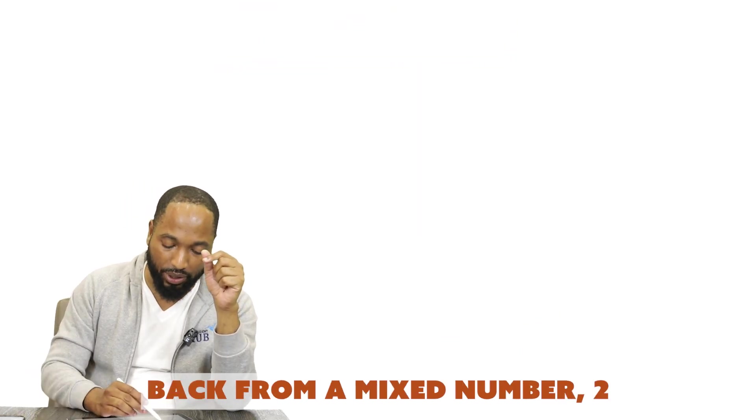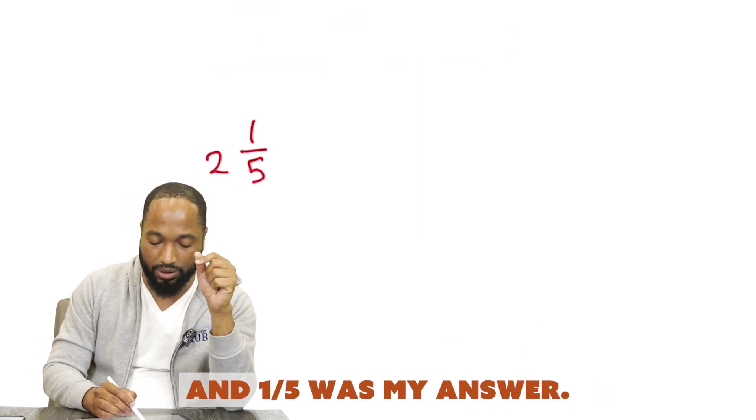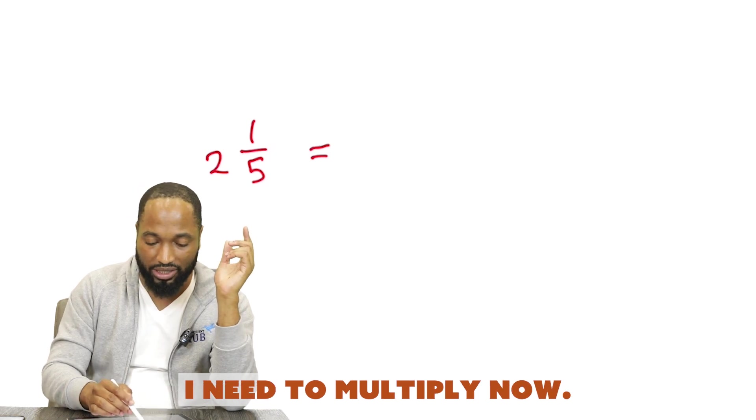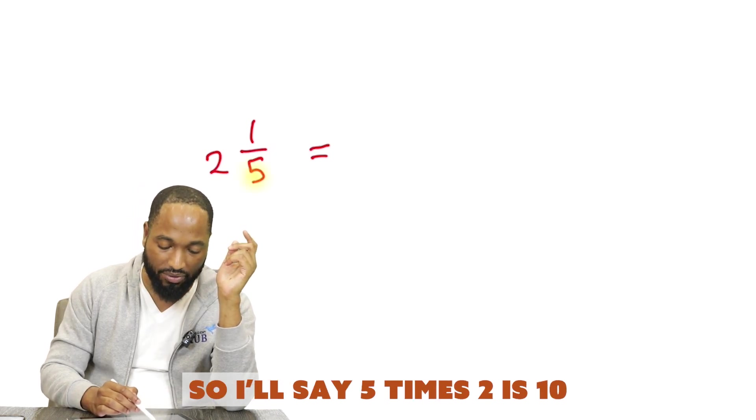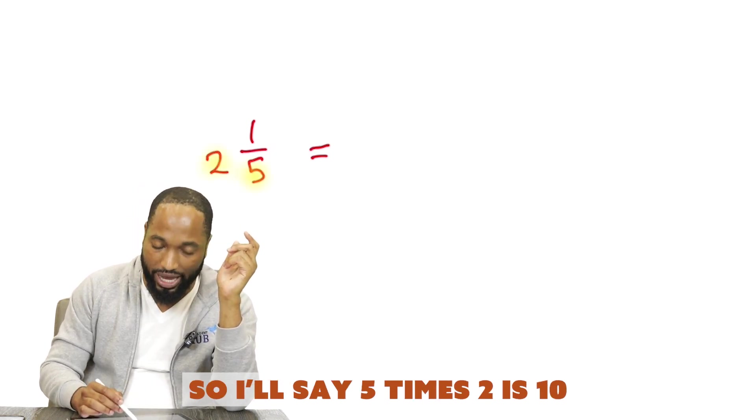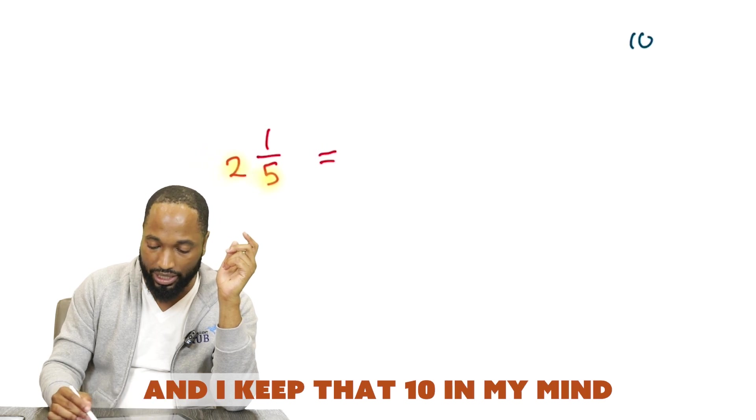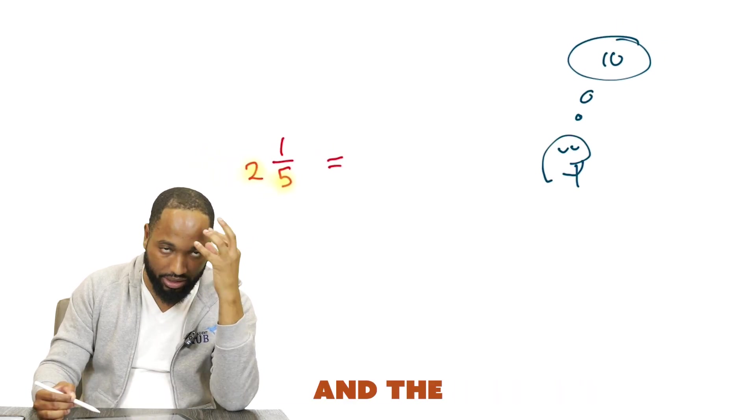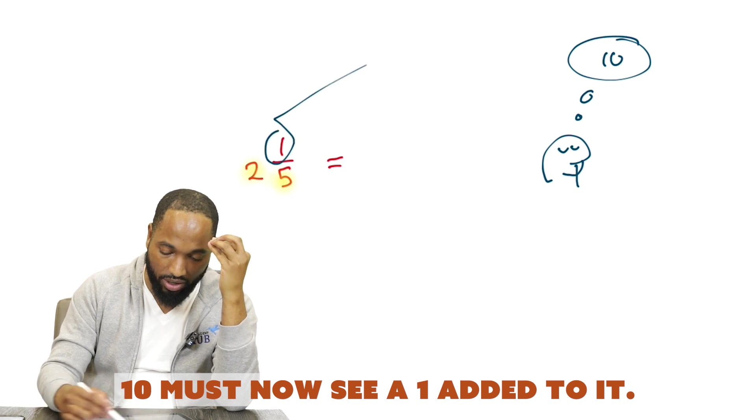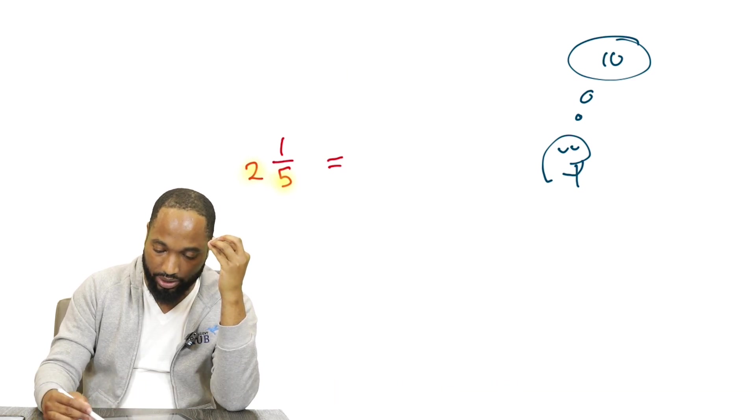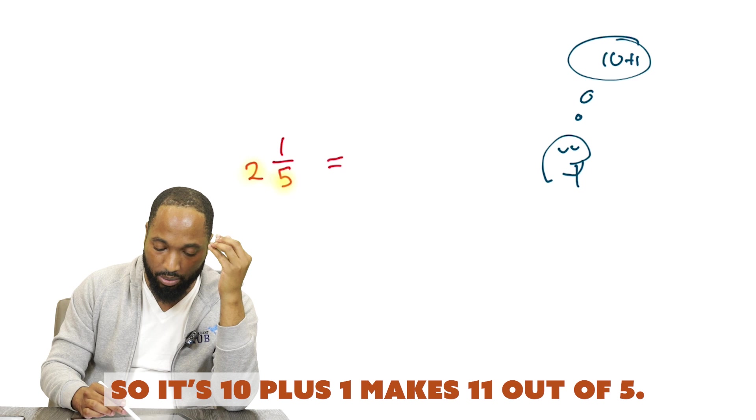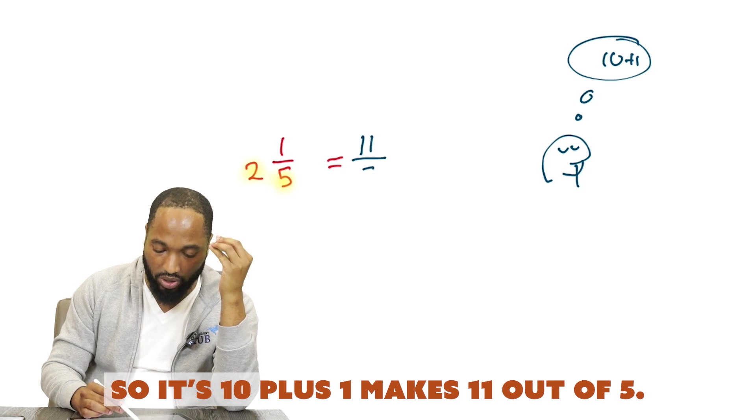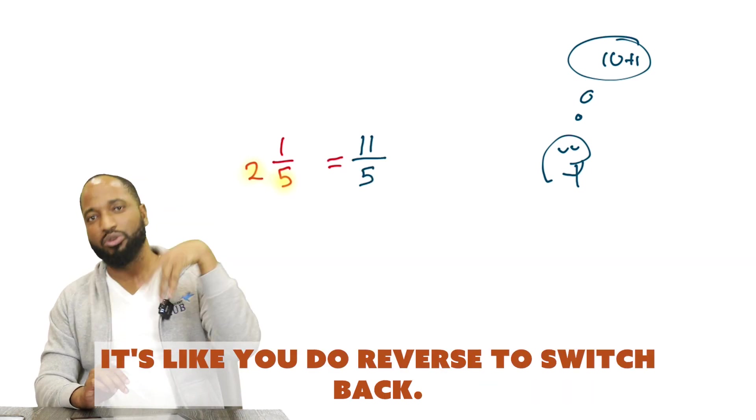And if I want to go back from a mixed number - 2 and 1/5 was my answer - if I want to go backwards, I need to multiply now. So I'll say 5 times 2 is 10. And I keep that 10 in my mind. And the 10 must now see a 1 added to it. So it's 10 plus 1 makes 11 out of 5. It's like you do the reverse to switch back.